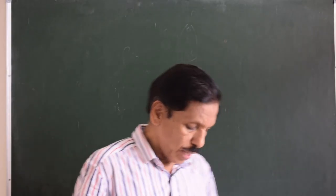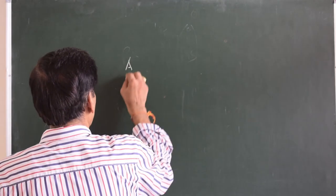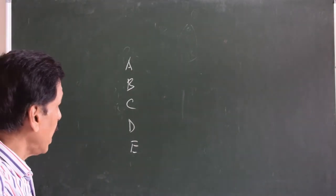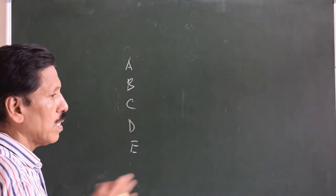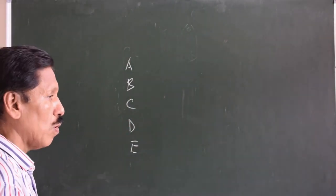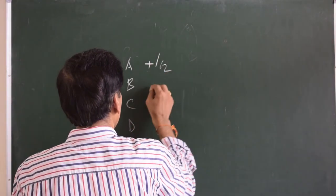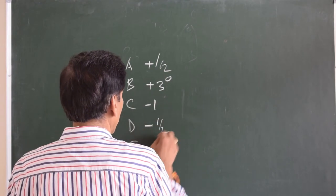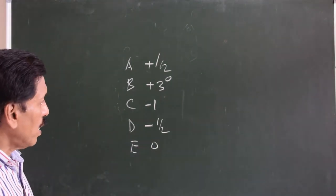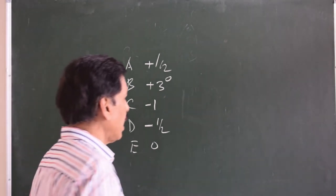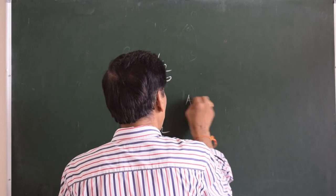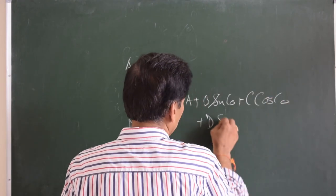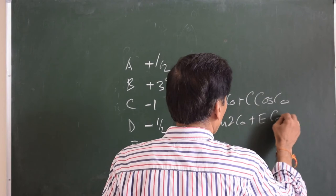Let us assume that we know the value of A, B, C, D, and E at any given place. This is the effective A, B, C, D, E of the ship plus the magnetic compass. For example, A is plus half degree, B is plus 3 degrees, C is minus 1 degree, D is minus half, and E is 0. Then if the ship is on 040 degree heading, the deviation on 040 would be: A plus B sine(course) plus C cos(course) plus D sine(2×course) plus E cos(2×course). Whatever we get by algebraic addition will be the deviation on that particular heading.